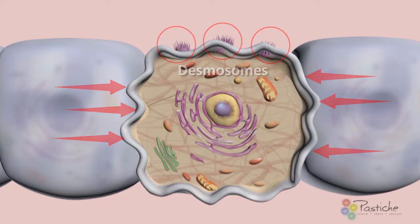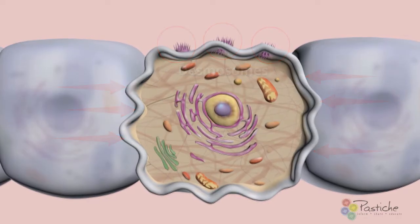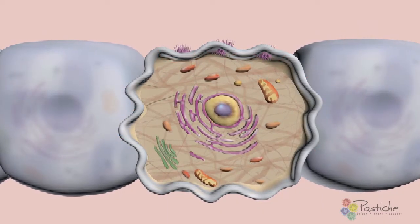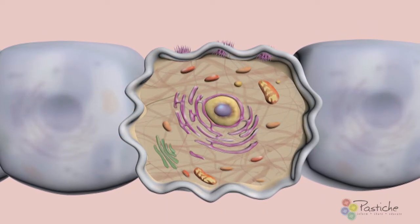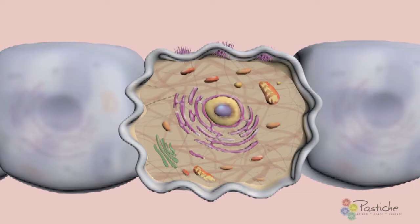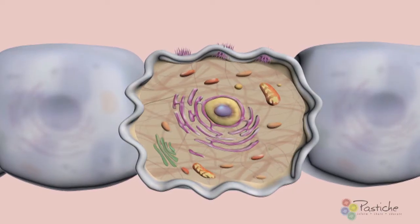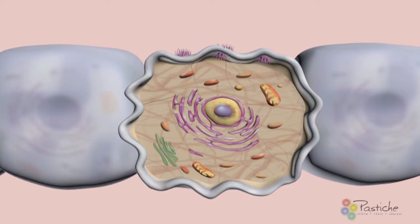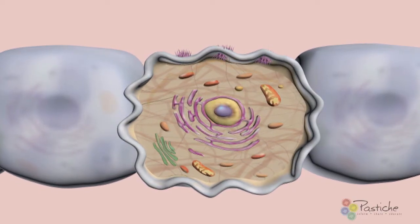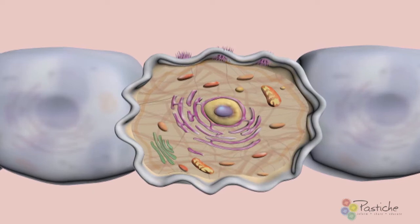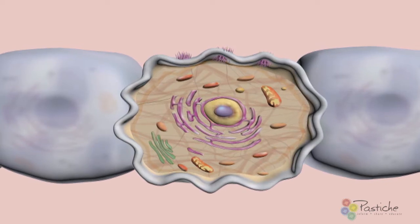It is in the stratum spinosum layer that the keratinocyte plays one of its primary roles in skin cell barrier defense, through a direct interaction with the melanocyte to provide protection for the cell nucleus.